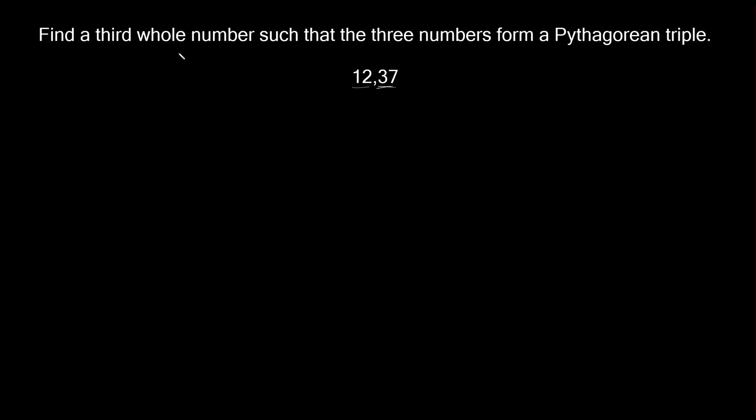This one says find a third whole number such that the three numbers form a Pythagorean triple. Alright, so we're already given two numbers right here, 12 and 37. We're trying to figure out what third number would form a Pythagorean triple with these two.